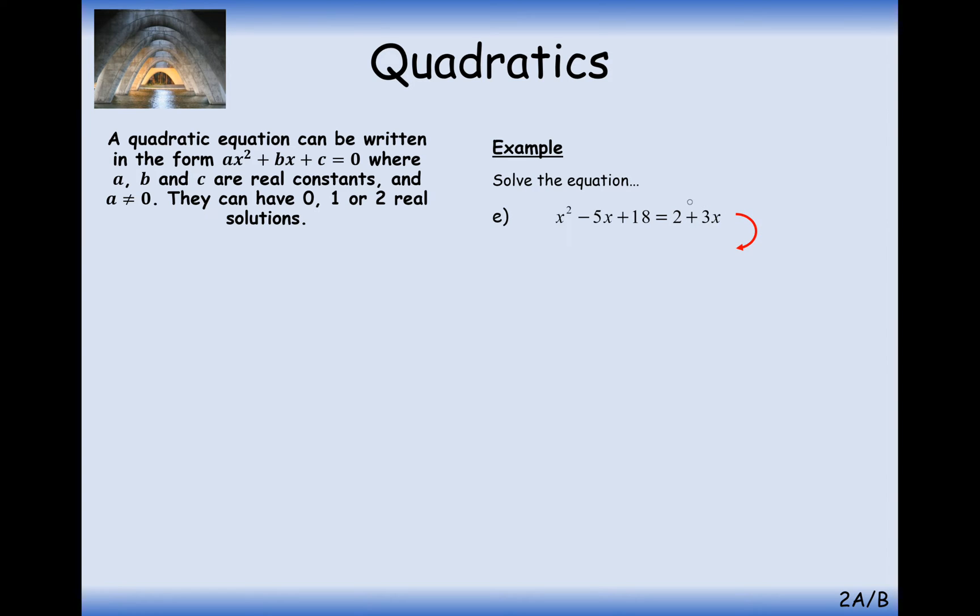Now this is a classic example where we're going to have to force it into equaling 0 on one side. So what we need is to subtract, or if it was a negative, add these components onto the left-hand side. Now we're going to factorise it. So in this case here, it's going to be x minus 4 and x minus 4. And in this case, we only get one solution because we've got the same bracket appearing twice. So x equals 4 is our answer.